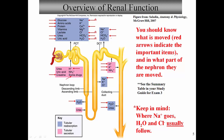In the distal convoluted tubule, we have more reabsorption of sodium, chloride, and water — remember these can be lumped together. We also reabsorb more bicarbonate. Notice what's being secreted in the distal portion of the DCT and beginning of the collecting duct: hydrogen ion, potassium ion, and ammonium — substances we don't want in the body or have in excess. One of the most important things occurring in the DCT is the secretion of these different substances.